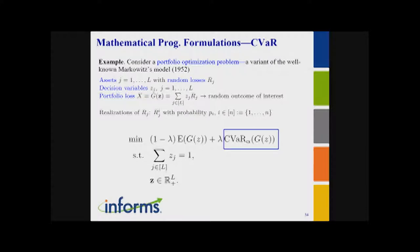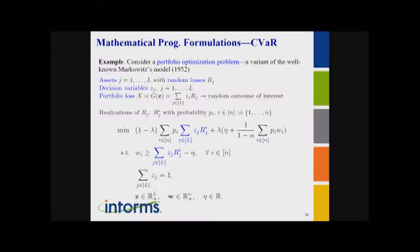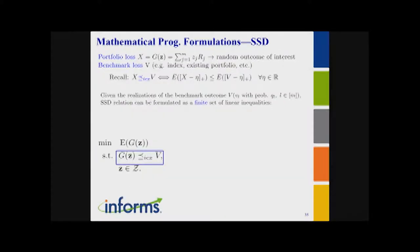Here's an illustration using portfolio optimization. You have the allocation decision, and the random outcome of interest is the total loss — this is your outcome mapping. I'm just going to plug in the realization of my outcomes, along with the feasibility constraints for this problem. The additional constraints I add capture the CVaR quantity — it's the same LP trick applied to a specific application.